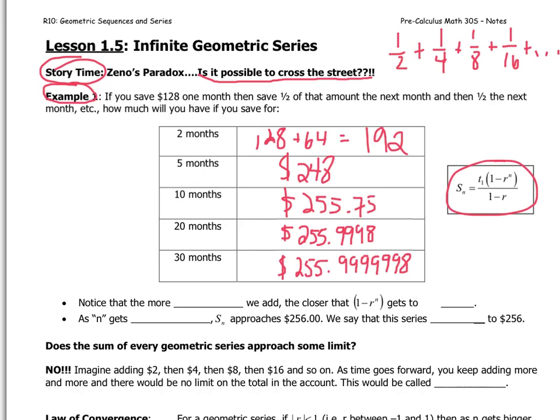Okay, well, what's happening here? Well, we're getting closer and closer to 256. Okay, so let's fill in below. Notice that the more terms we add, 1 minus r to the power of n gets really, really close to the number one. Okay, so as n gets larger, sn, in this case, approaches $256.